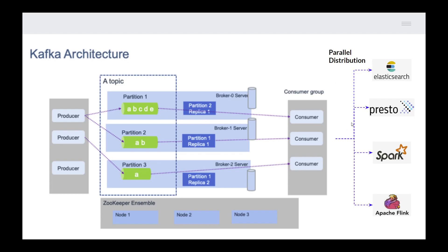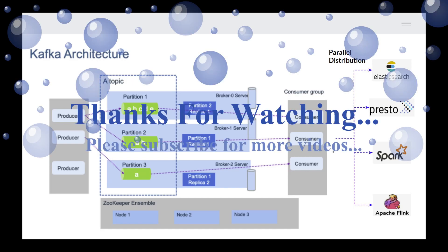Since we have multiple brokers and multiple partitions, consumers can distribute similar sets of data parallelly to multiple external resources like Elasticsearch, PostgreSQL, Apache Spark, and Apache Flink. This is how the Kafka architecture works. Thank you.